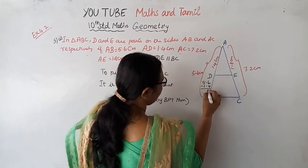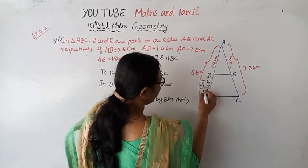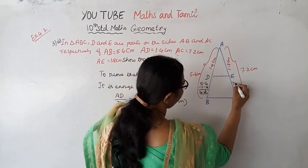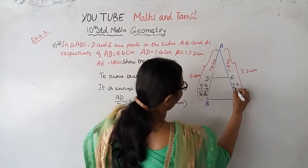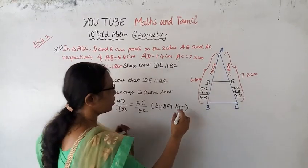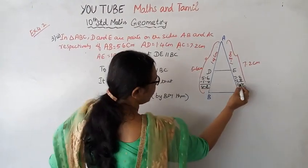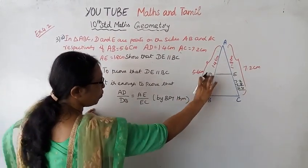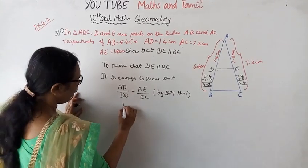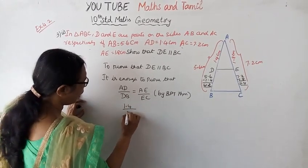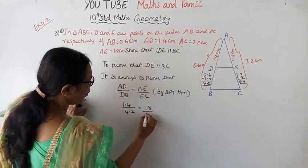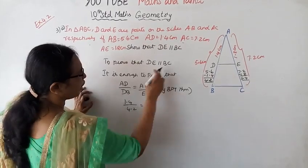DB equals 4.2 cm. Similarly, EC equals 7.2 minus 1.8, which equals 5.4 cm. Now substitute these values: DB is 4.2 centimeters, EC is 5.4 centimeters. So we have AD, which is 1.4, divided by 4.2 equals 1.8 divided by 5.4.